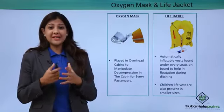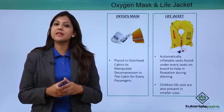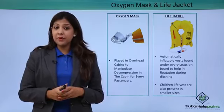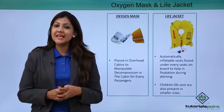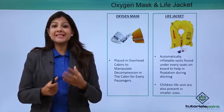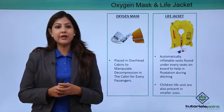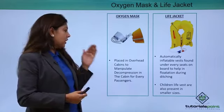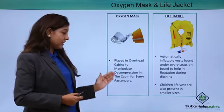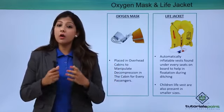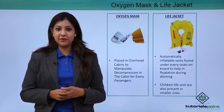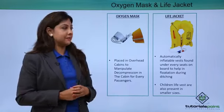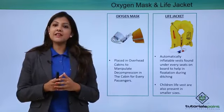Starting with the oxygen mask: oxygen masks are placed above in the Passenger Service Unit, or PSU. In case of decompression, these oxygen masks deploy automatically. The passenger is supposed to pull the mask toward them and secure the harness around the head area, then start the oxygen flow by pulling it toward themselves. Each and every passenger has an oxygen mask for emergency use, and in each panel there is an extra mask in case one is not working correctly.